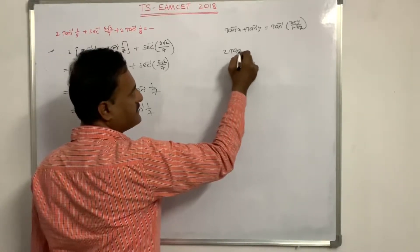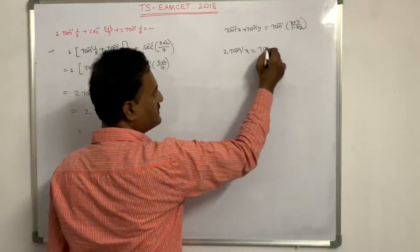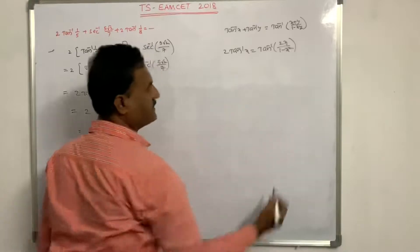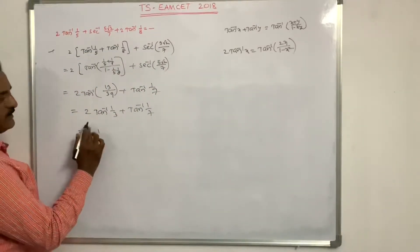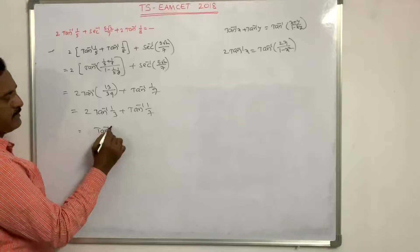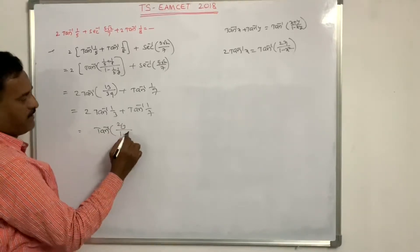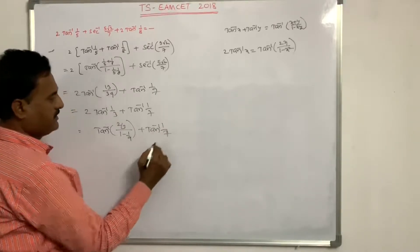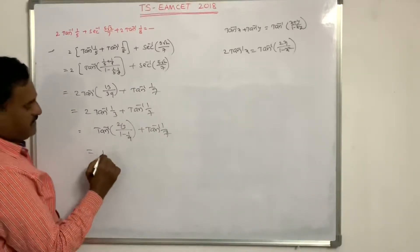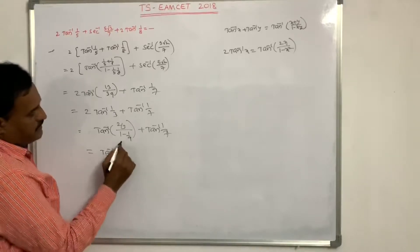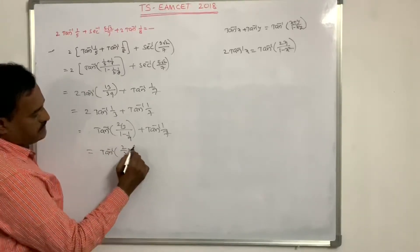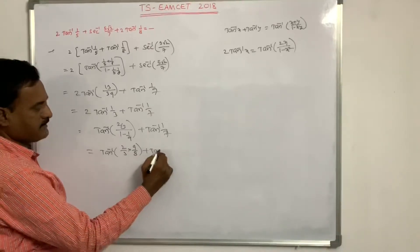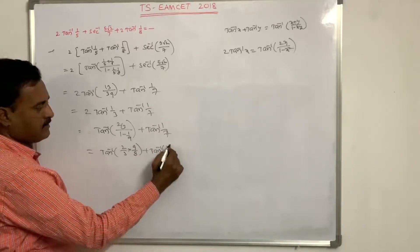Using the formula 2tan⁻¹x = tan⁻¹[2x/(1−x²)], with x = 1/3: 2tan⁻¹(1/3) = tan⁻¹[2/3 / (1 − 1/9)] = tan⁻¹[(2/3)/(8/9)] = tan⁻¹(3/4). Then add tan⁻¹(1/7).